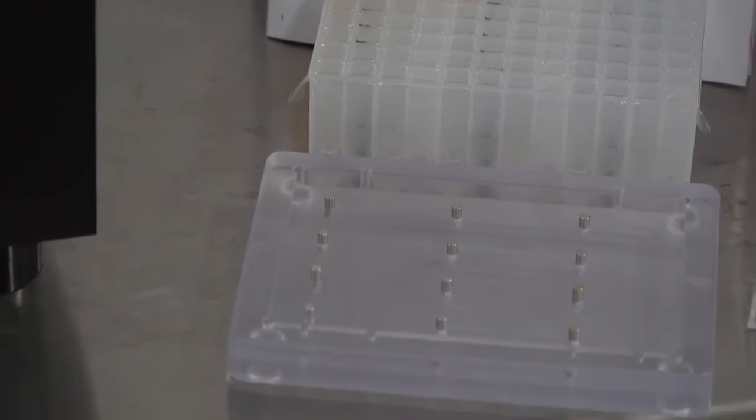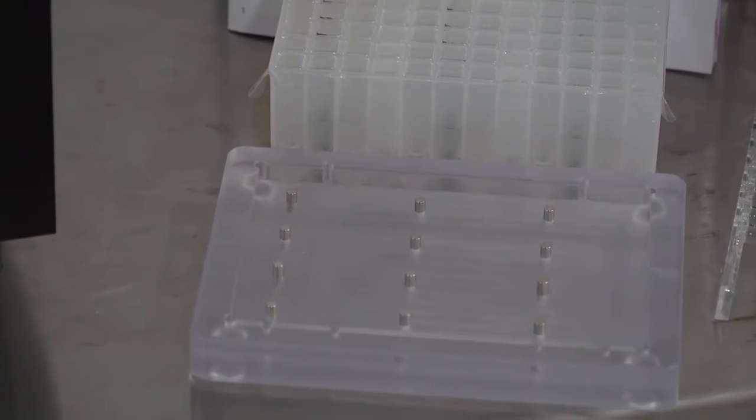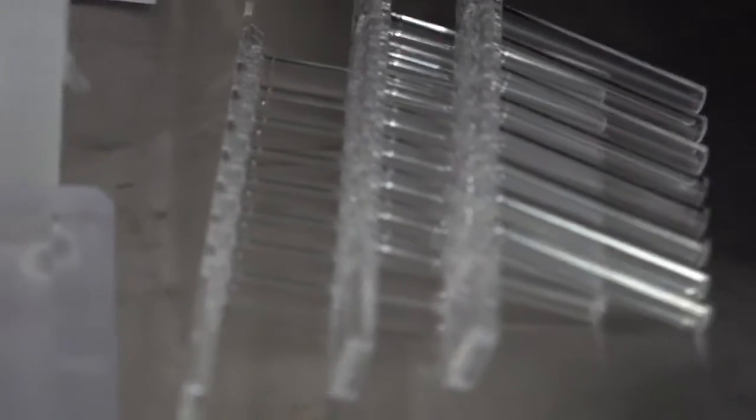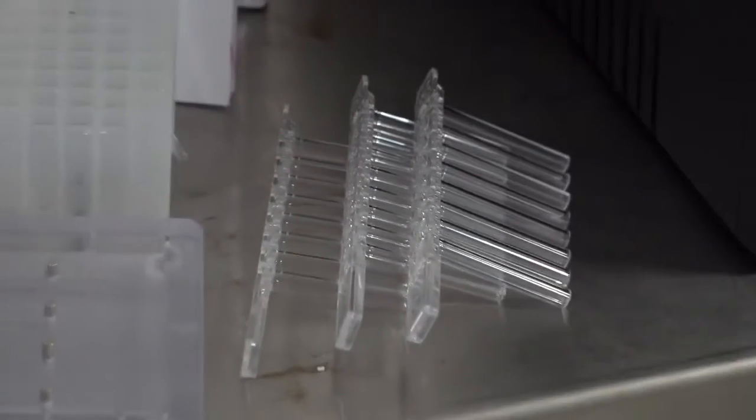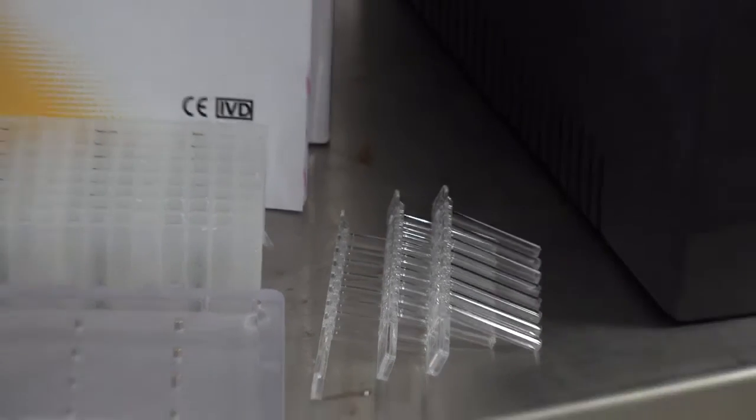The extractor also comes with a magnetic plate so upon completion of the extraction procedure these magnets which are neodymium magnets can withdraw the extraction magnetic beads to the bottom of the plate so that you can safely withdraw the sample. In addition to this we have these specific strips which will be part of the process of extraction and then we have the calibration plate.